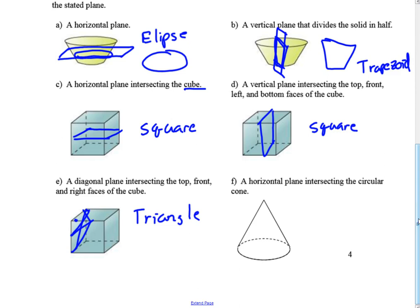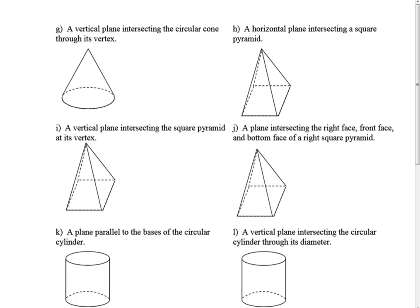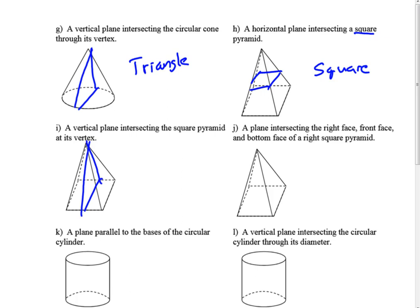A horizontal plane intersecting a circular cone gives a circle cutting across it. A vertical plane intersecting a circular cone through its vertex creates a triangle. A horizontal plane intersecting a square pyramid — since the base is square, these cross sections are all going to be square as long as the plane is parallel to the base. A vertical plane intersecting a square pyramid at its vertex gives a triangle. A plane intersecting the right face, front face, and bottom face of the square pyramid would likely be a trapezoid.